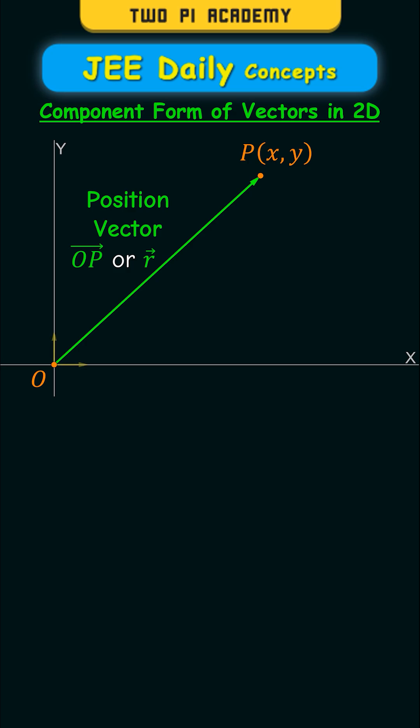In the component form, this vector is denoted by using the unit vectors along the x-axis i-cap and along y-axis j-cap respectively. The perpendicular component along the x-axis is given by x into i-cap and the perpendicular component along the y-axis is y into j-cap.